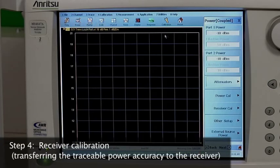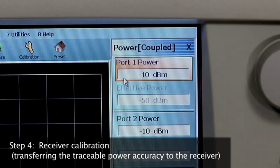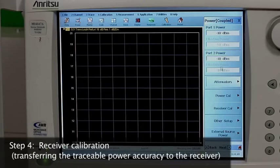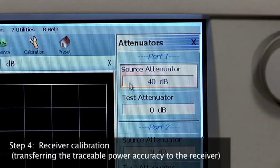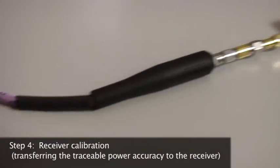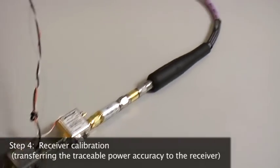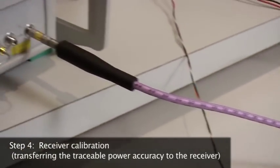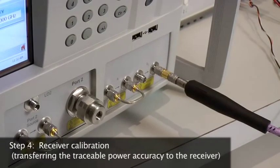Step four, receiver calibration, enables us to transfer traceable power accuracy to the receiver. The power level selected was minus 10 dBm with 40 dB of source attenuation. Remember to take into account the gain of the composite receiver when determining the power level at which to perform the receiver calibration. For this demonstration, we selected a power level about 45 dB below the 1 dB compression point of the B2 receiver, about minus 5 dBm.